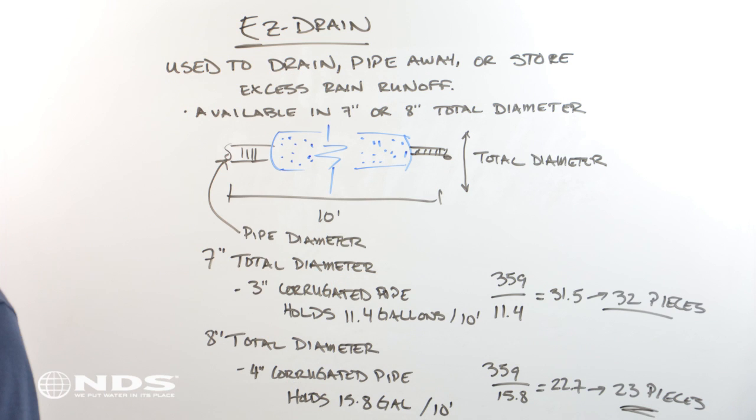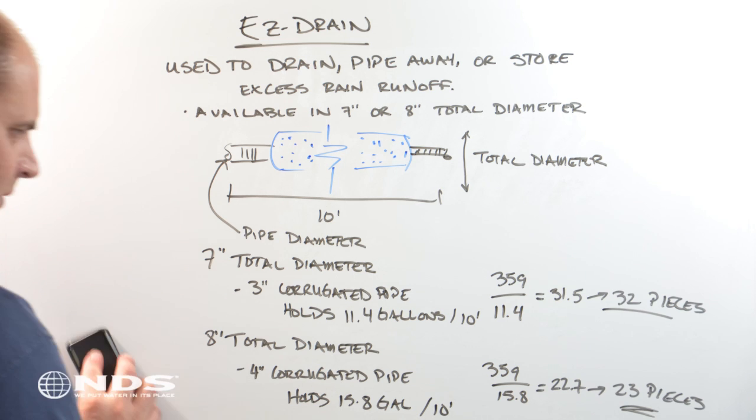The 8 inch diameter easy drain can hold 15.8 gallons of water per 10 foot section. It would take 23 10 foot sections to store 359 gallons of water.